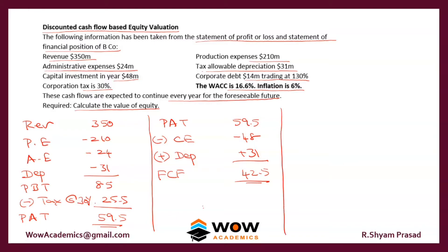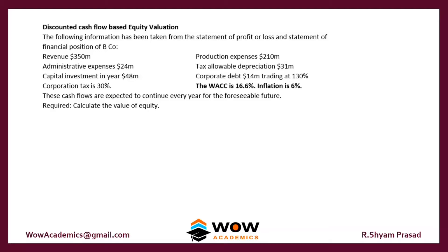The next step is to find the value of the company. Value of company equals free cash flow divided by WACC. The free cash flow is 42.5, and the WACC is given as 16.6%, but this includes inflation. Since the cash flows are a single-year figure, we cannot have inflation inside the WACC — we need to remove it.